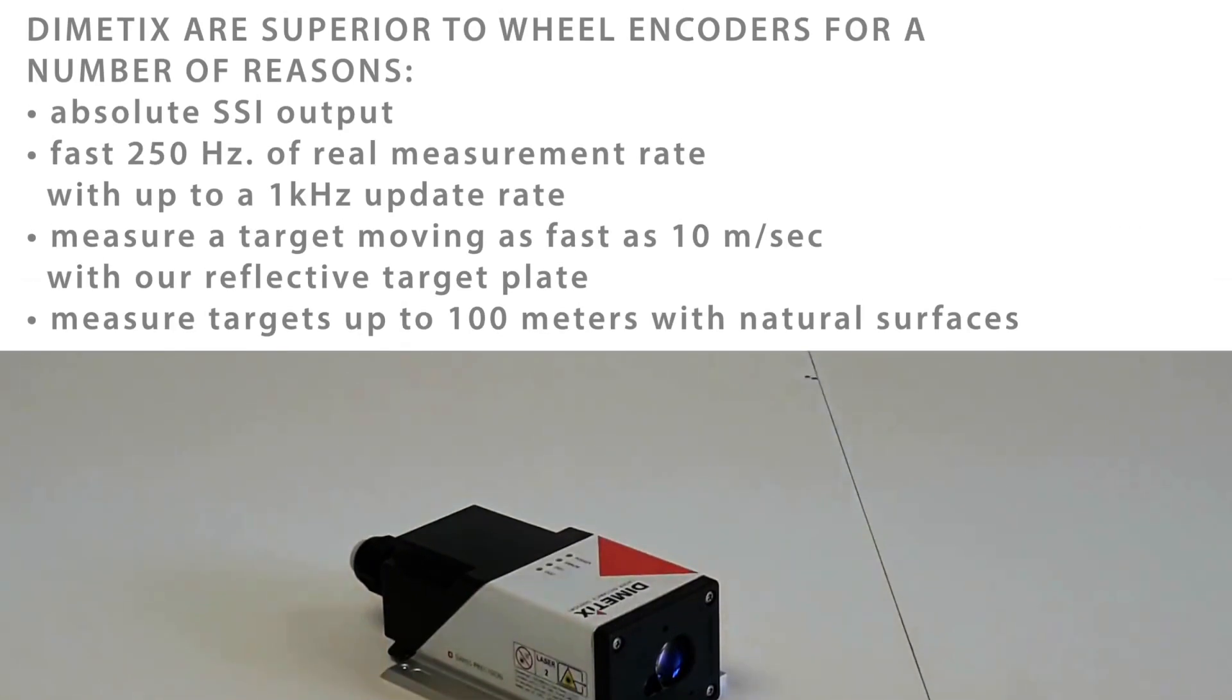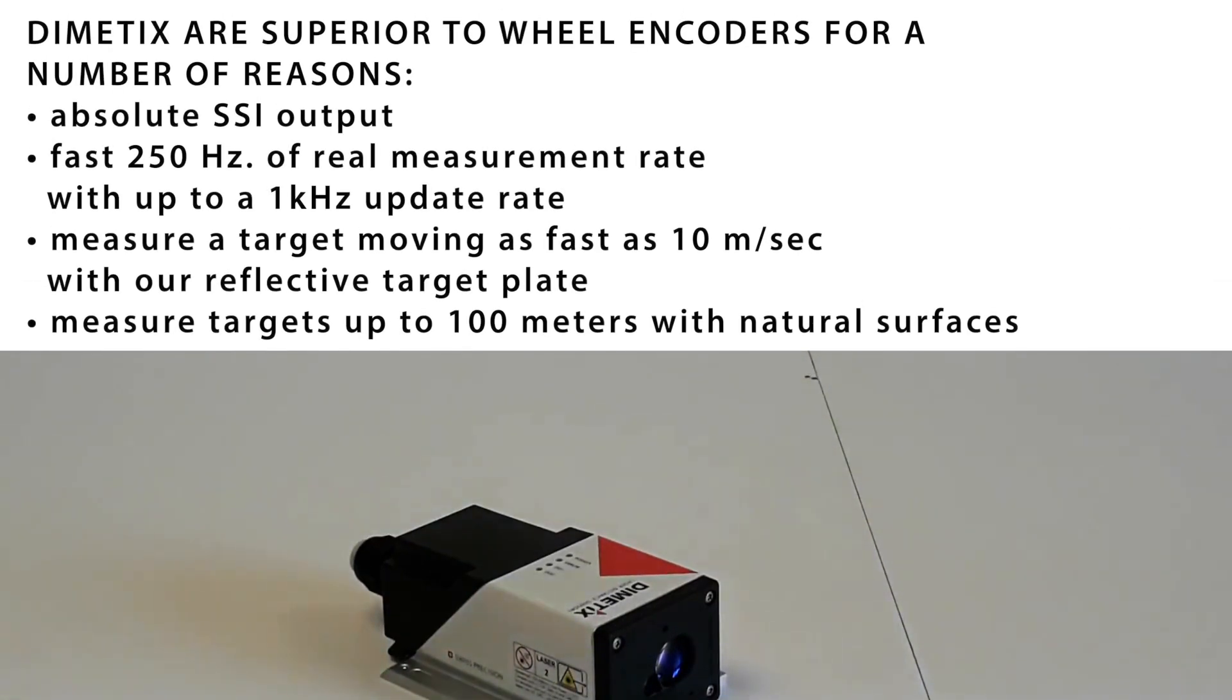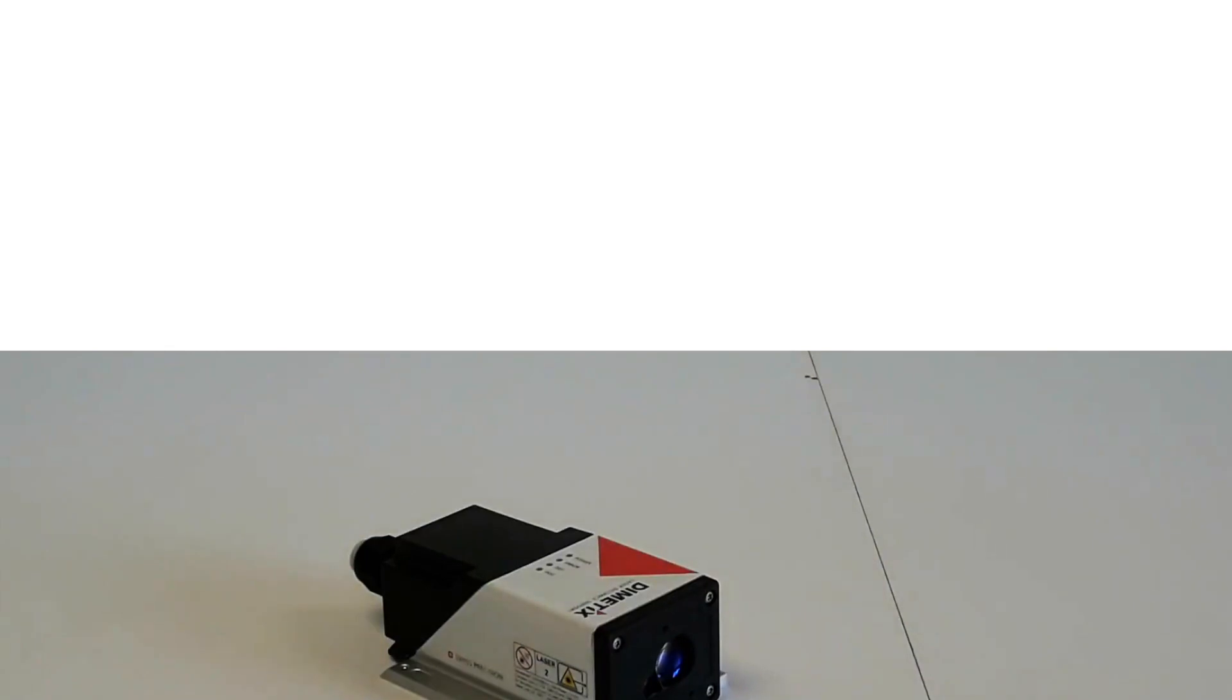Dymedix lasers are superior to wheel encoders for a number of reasons. They have absolute SSI output. They are fast, 250 Hz real measurement rate with up to 1 kHz update rate. They measure targets moving as fast as 10 meters per second with a reflective target plate, and can measure targets up to 100 meters with natural surfaces.